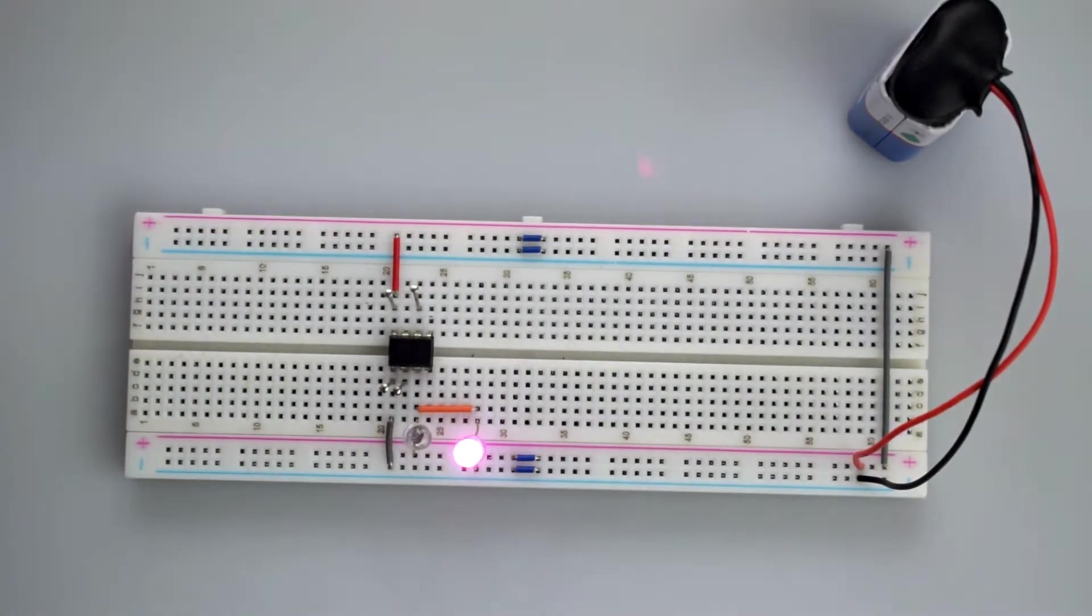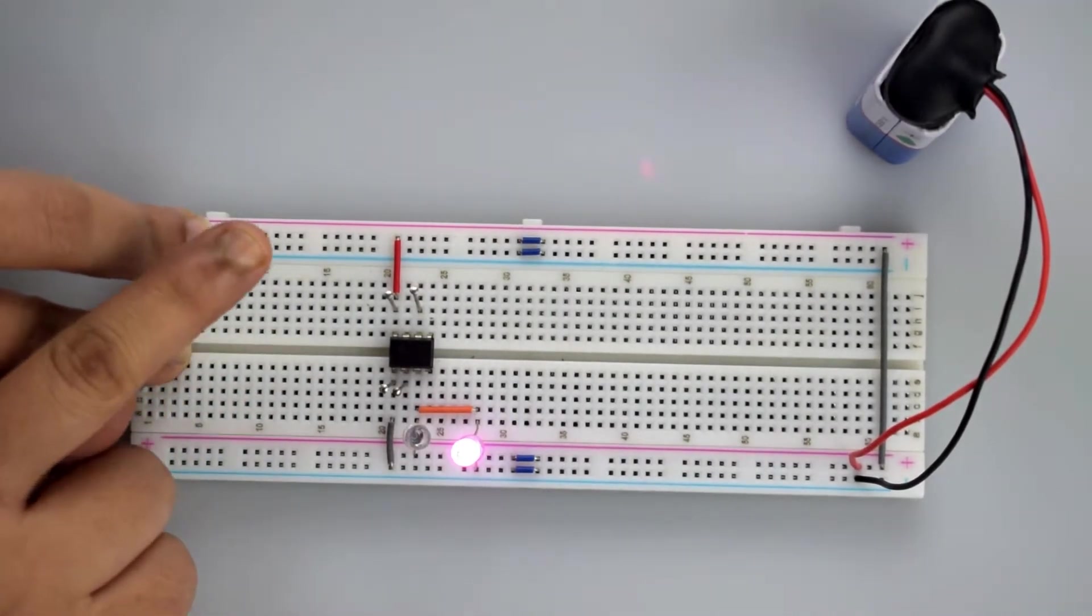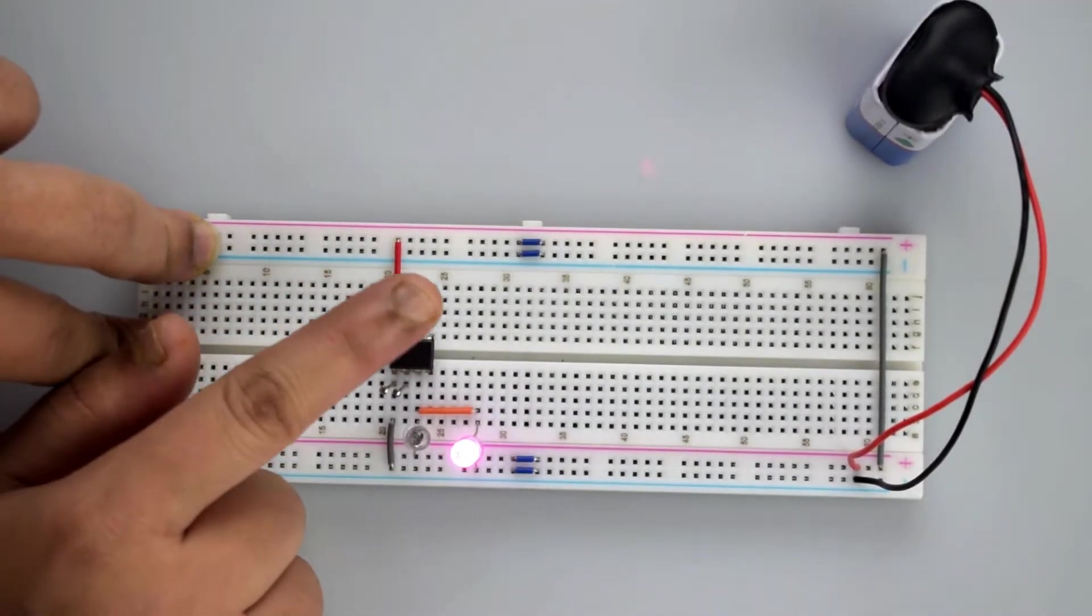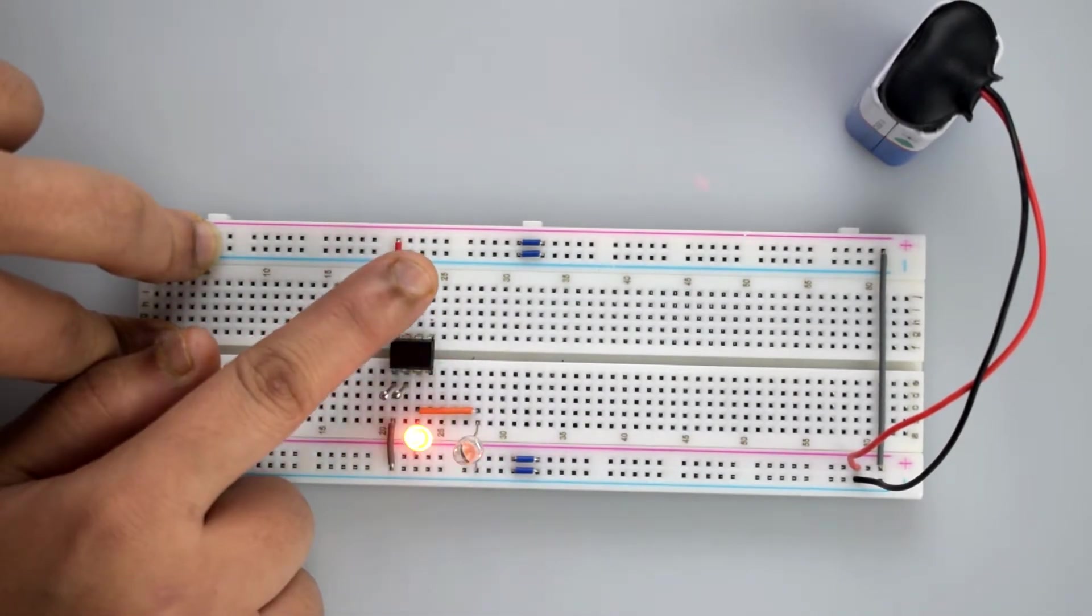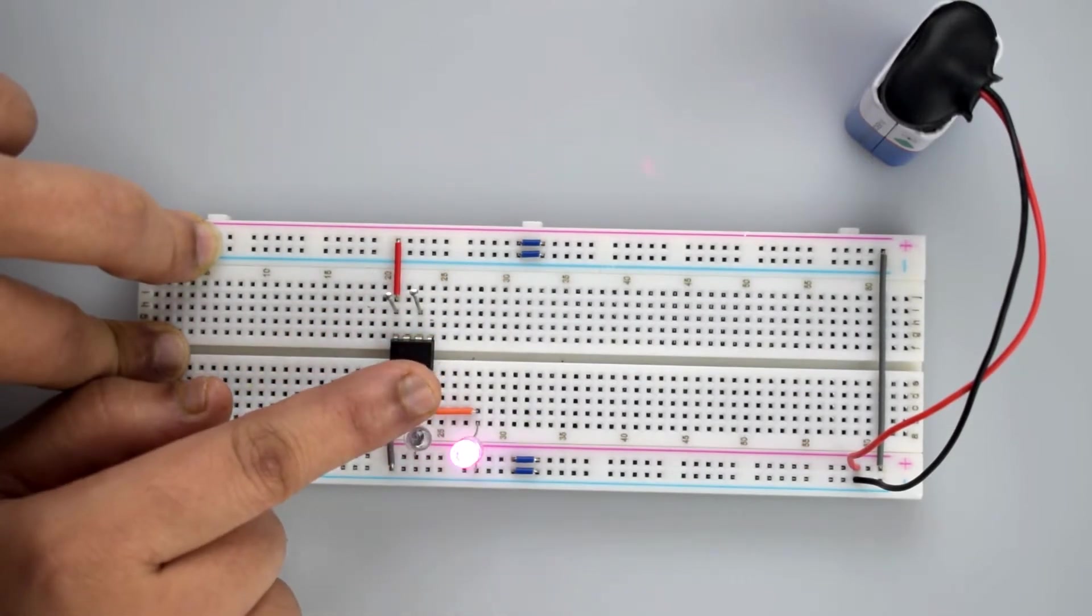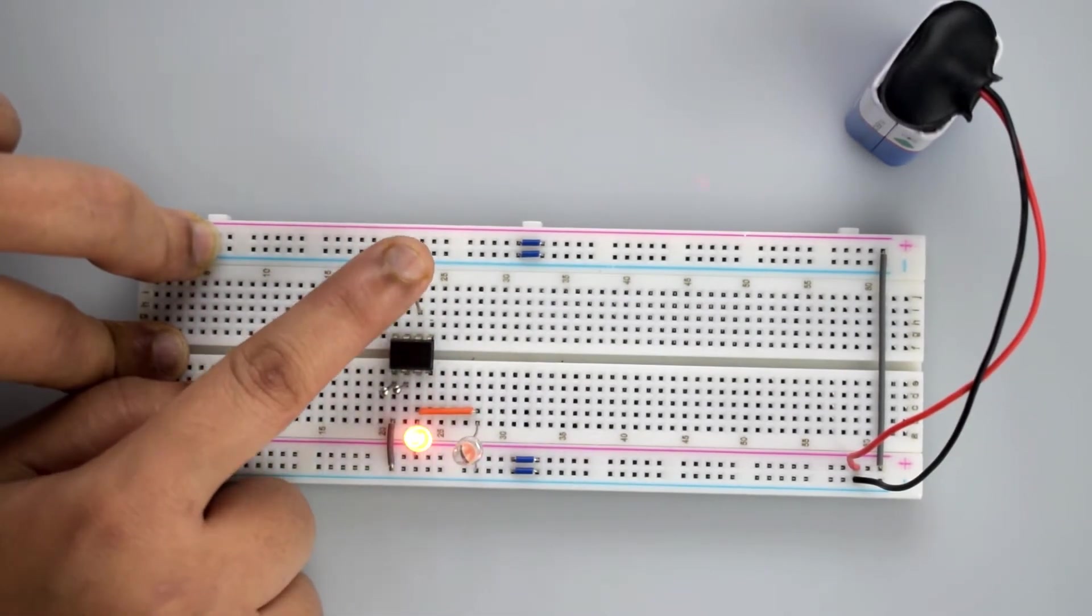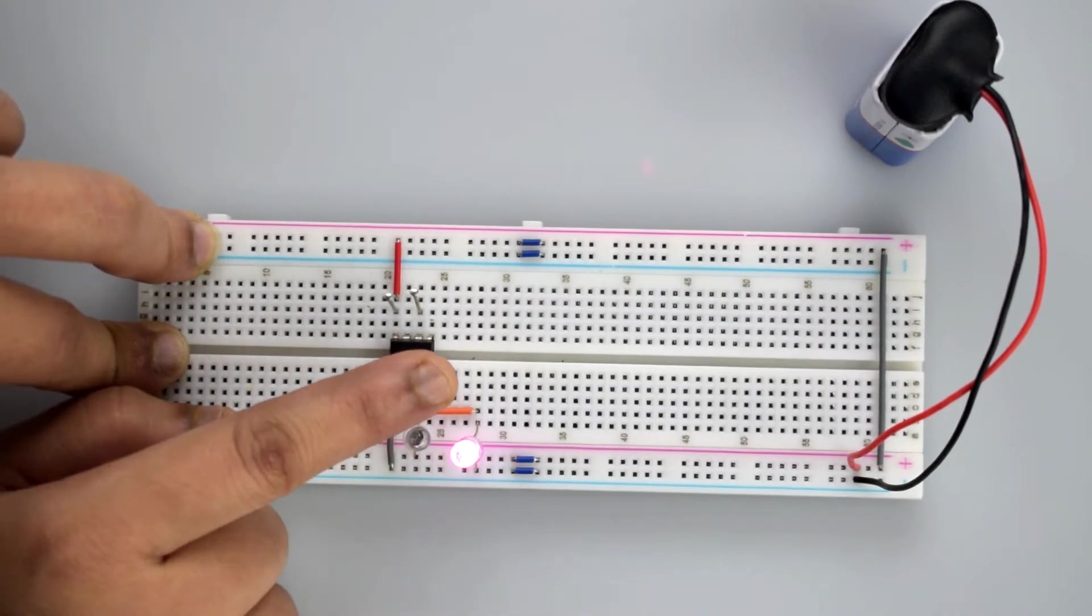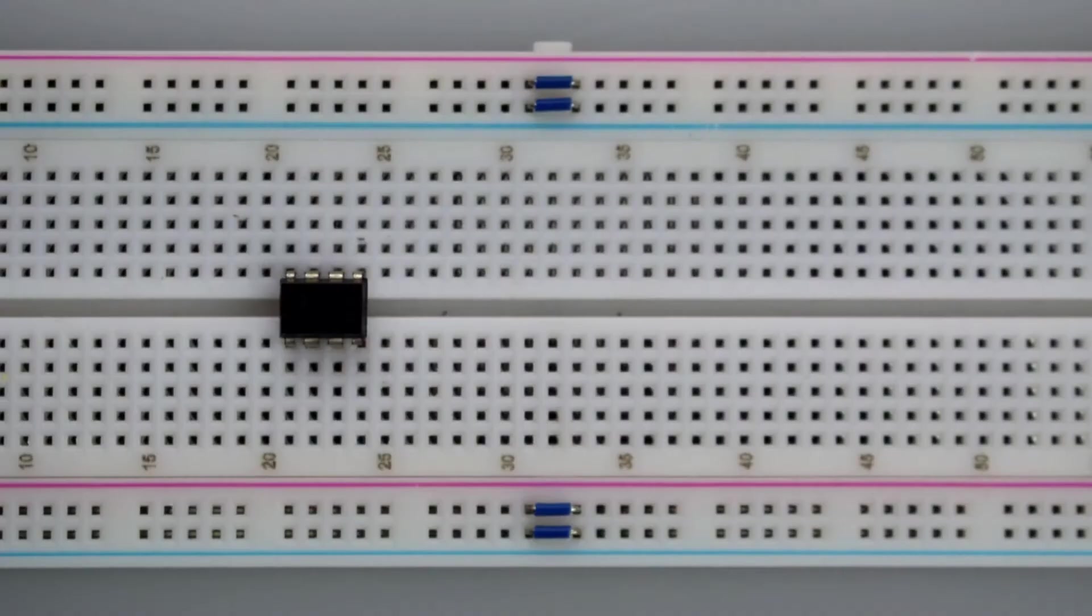As you can see, the LED is glowing up. So now touch the different wires. When you touch the touch plate, the alternative LEDs will glow up. So this is our touch sensor project using basic components. Thank you.